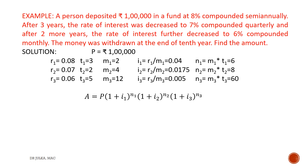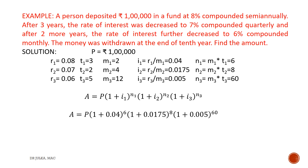We know that amount equals principal multiplied by 1 plus I1 raised to the power N1, multiplied by 1 plus I2 raised to the power N2, multiplied by 1 plus I3 raised to the power N3. Inserting the values of P, I1, I2, I3, N1, N2, and N3 into the formula and completing the calculation, we will get an amount of rupees 1,96,082.61.